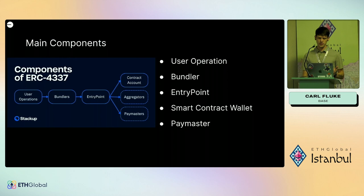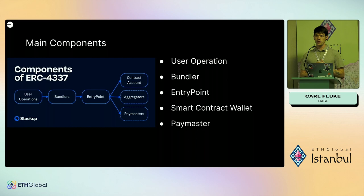Let's get into actual account abstraction — ERC-4337 based account abstraction. Stack Up has a fantastic quick start. I want to cover some high-level items so you have an understanding for the demo. First, the user does user operations instead of transactions. The gas fees are done a little differently and you want to encode the function data. It's more or less the same — you still use the API — but it's a little different from doing regular transactions.